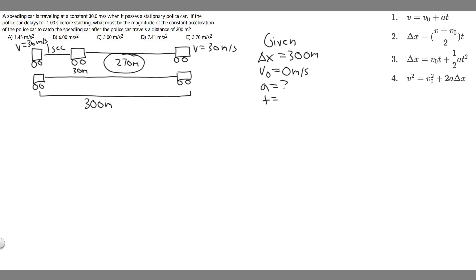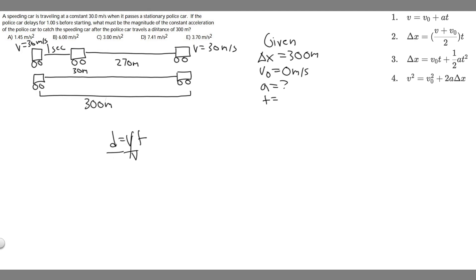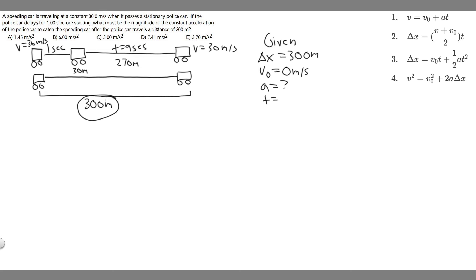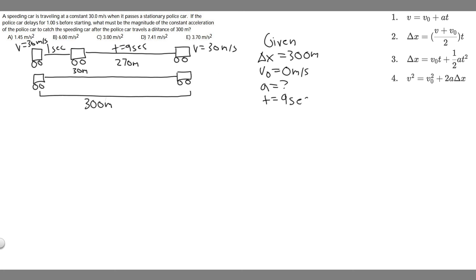If the speeding car is going to travel 270 meters, how long is it going to take? We know distance equals velocity times time. So time equals distance divided by velocity: 270 divided by 30, which is nine seconds. So it's going to take nine seconds for the speeding car to travel 270 meters. Because this one starts at 30 meters ahead and the other starts at zero, the time for the police car to get to 300 meters is also nine seconds. We just use that to find the time.